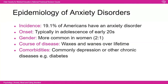The epidemiology of anxiety disorders: one study found 19.1% of Americans have experienced symptoms over a year, though those formally diagnosed is much lower. Anxiety typically occurs in adolescence or early twenties but can occur at any stage. It's more common in women — a two-to-one ratio. The course waxes and wanes over life, and it's associated with comorbidities such as depression and chronic diseases like diabetes.